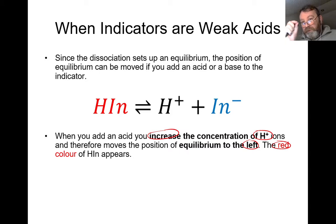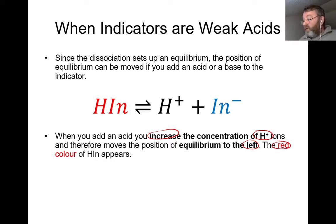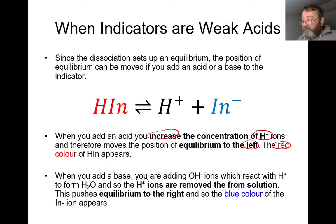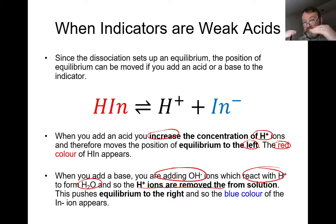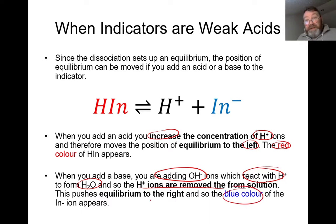We only focus on one stress: either increasing or decreasing H+. Increase H+ → red; decrease H+ → blue. The only way to decrease H+ is to add in OH-, because the OH- will use up the H+ to form water, removing it from solution and dropping its concentration. When you add a base you add OH-; they react with H+ to form H2O, so H+ ions are removed from solution. According to Le Chatelier's principle, the system wants to recreate H+, so equilibrium moves to the right and the blue color predominates.